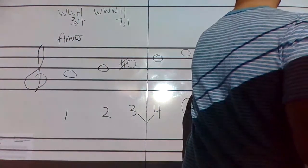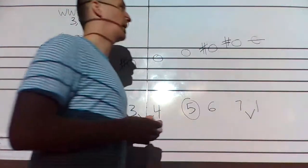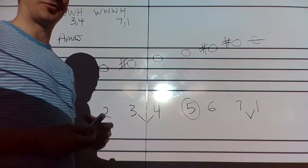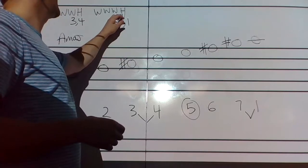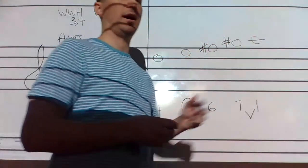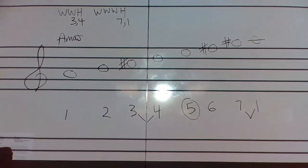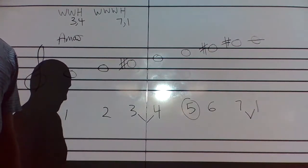I'm on G sharp, which means my last note has to be some kind of A, because A comes after G in the musical alphabet. I need a half step here at the end. G sharp to A is a half step, so I'm good. There's my A major scale: A, B, C sharp, D, E, F sharp, G sharp, A.